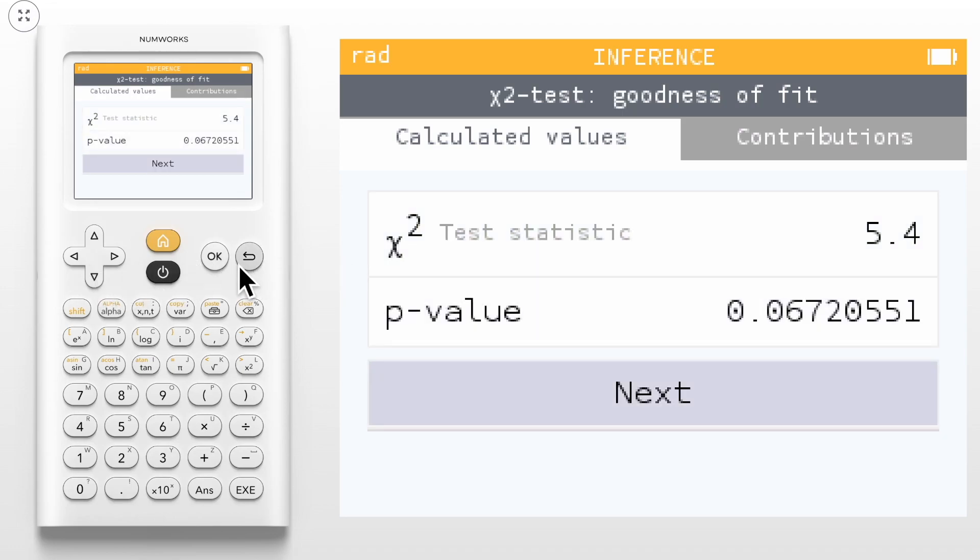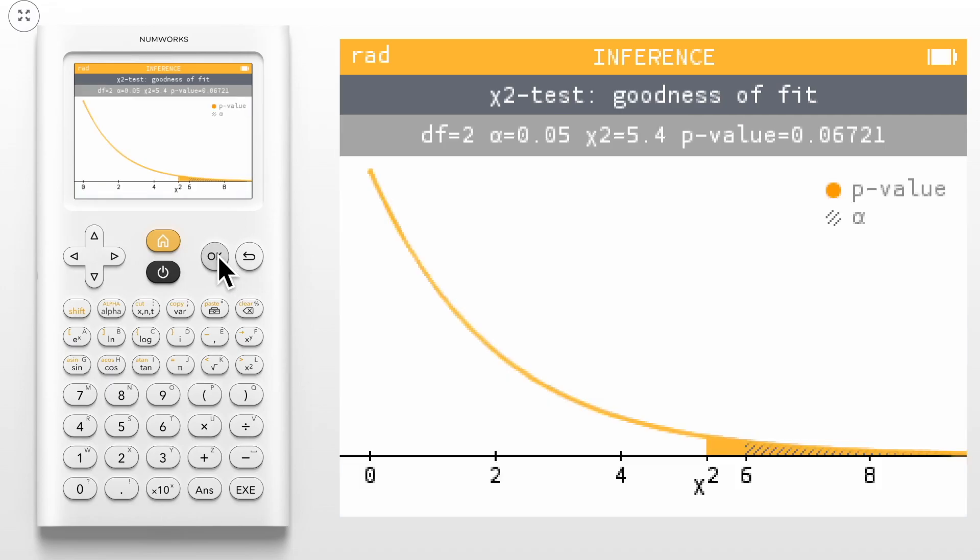Select Next. The final screen of our test provides a visual of our test statistics on the chi-squared distribution curve.